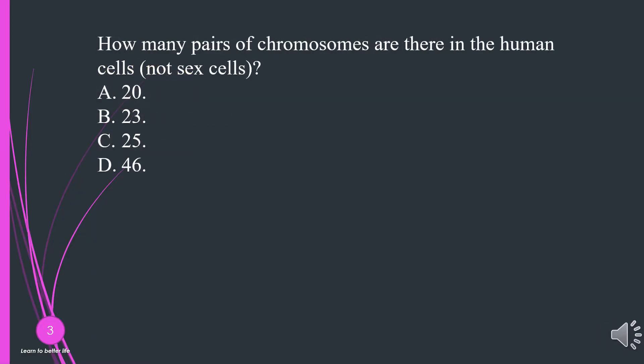How many pairs of chromosomes are there in the human cells, not sex cells? 20, 23, 25, or 46. The answer is 23.